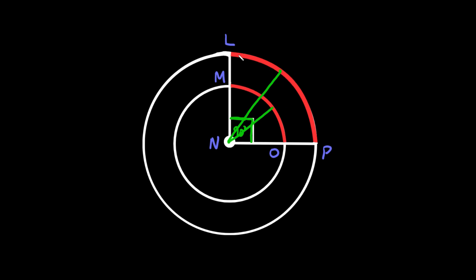So obviously the radii are not the same, which means these two arcs are not congruent. The small arc goes from M to O, and the other one from L to P — these are not congruent.